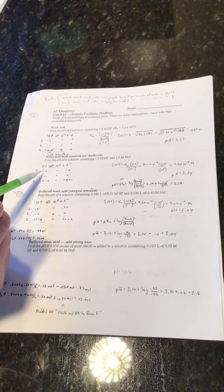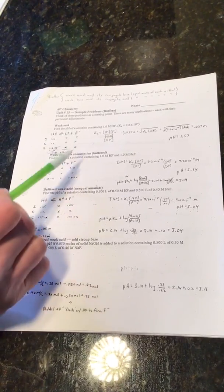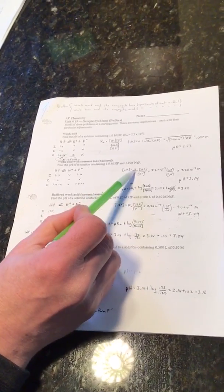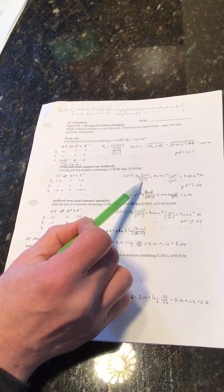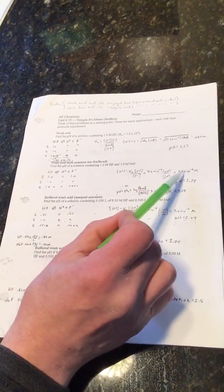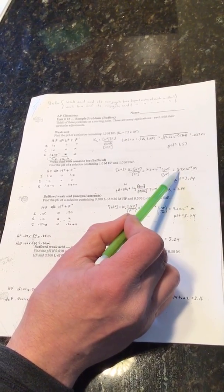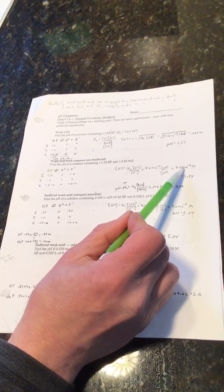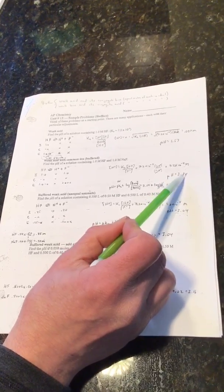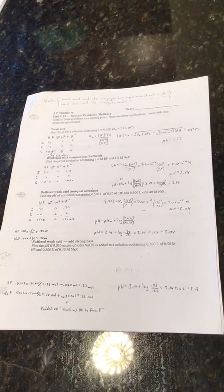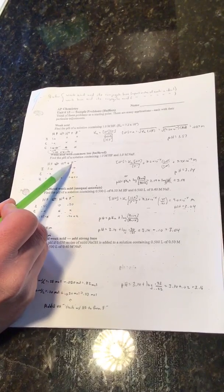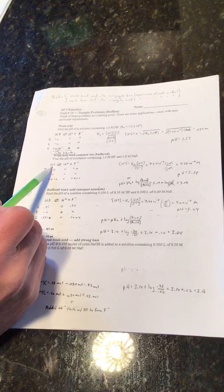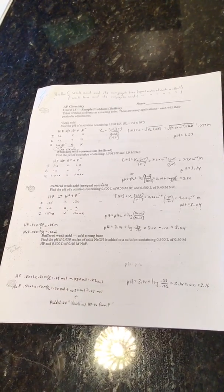Our ice box looks similar to up here, except notice we have 1.0 right here. We plug into H+ equals Ka times HF over F-. We get a couple of ones, they cancel out. We get 7.2 times 10 to the negative 4th as a concentration of H+, which corresponds to a 3.14 pH. Notice the common ion effect of adding the F- shifts the equilibrium to the left, decreasing the dissociation of the HF, making H+ concentration less.